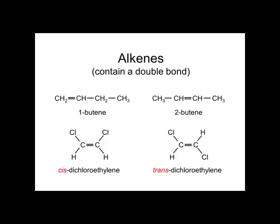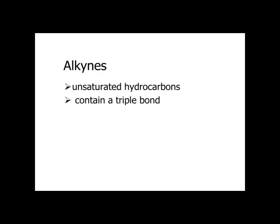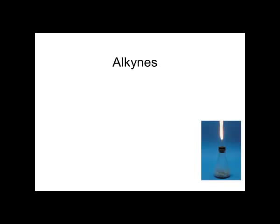Alkynes are unsaturated hydrocarbons that contain a triple bond. The first of them is ethyne, whose common name is acetylene, C2H2. This compound is 1-butyne — butyne because it has four carbons, and 1-butyne because the triple bond is on the first carbon. 2-butyne has the triple bond on the second carbon.